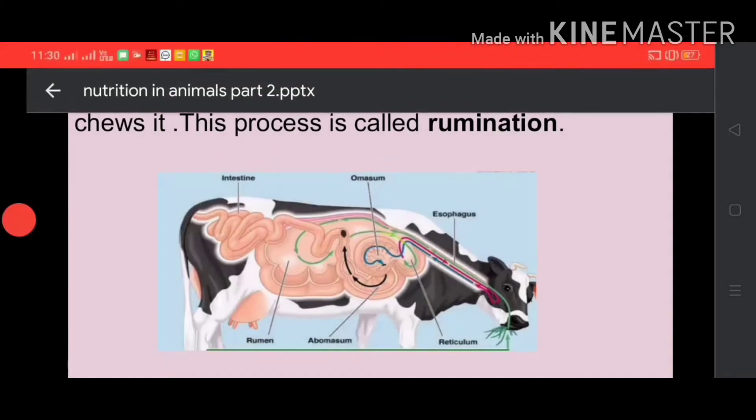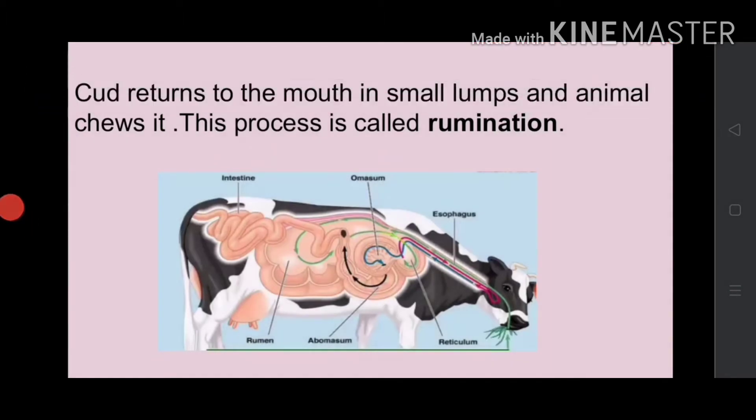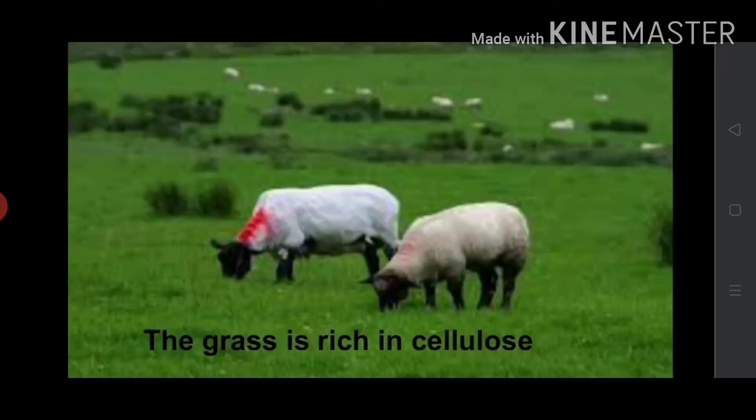This process is called rumination, and the animals are called ruminants. You know that these animals are herbivores that eat only plants.